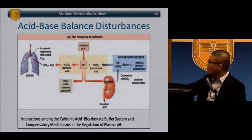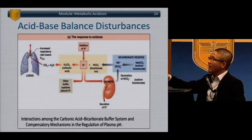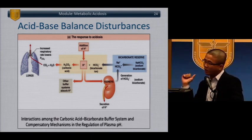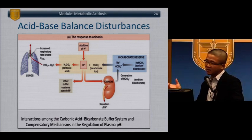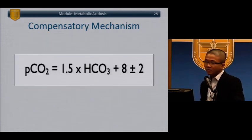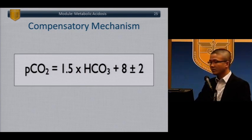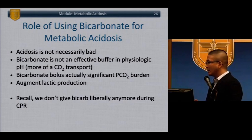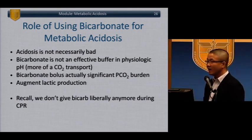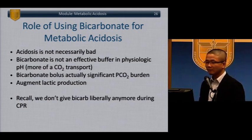Here's the interaction among the carbonic acid and bicarb buffer system. If you add a little bicarb, it combines with hydrogen and is eventually hyperventilated out as CO2. Here's your bicarb reserve on the right side of the screen. Winter's formula for metabolic acidosis: expected CO2 equals 1.5 times bicarb, plus 8, plus or minus 2. Respiratory compensation is fast, but what you're asking the patient to do is hyperventilate, which is not overall a good thing.